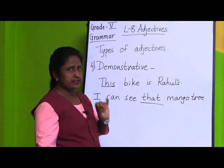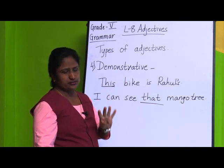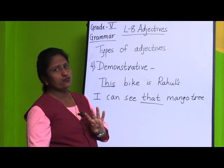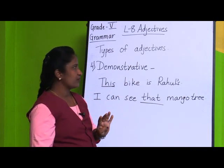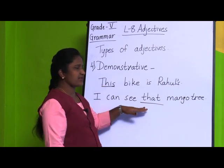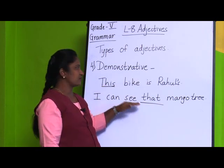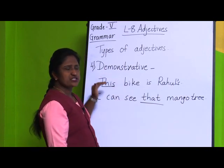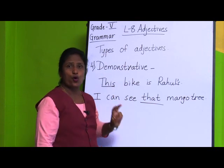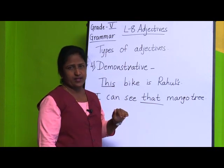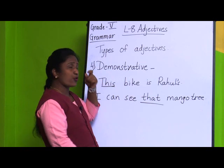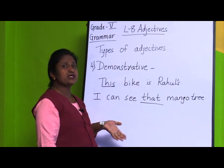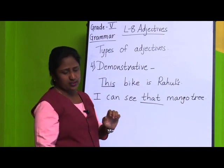There are four demonstrative adjectives: this, that, these, and those. 'This' and 'that' are used for singular nouns; 'these' and 'those' are used for plural nouns. To identify a demonstrative adjective in a sentence, ask the question 'which one?' — the answer will be the demonstrative adjective.